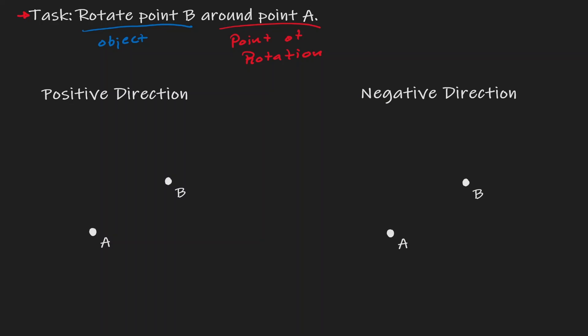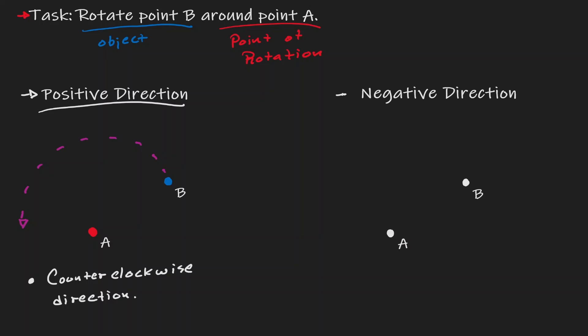When we are moving around a point, there are two directions that we can have. Let's illustrate the idea of a rotation with a positive direction. A is our point of rotation and B is the object. If B moves around A in a counter-clockwise direction, then we can say that object B has rotated in a positive direction. If B moves around A in a clockwise direction, then B has rotated in a negative direction. The units that we use for rotation are always degrees.